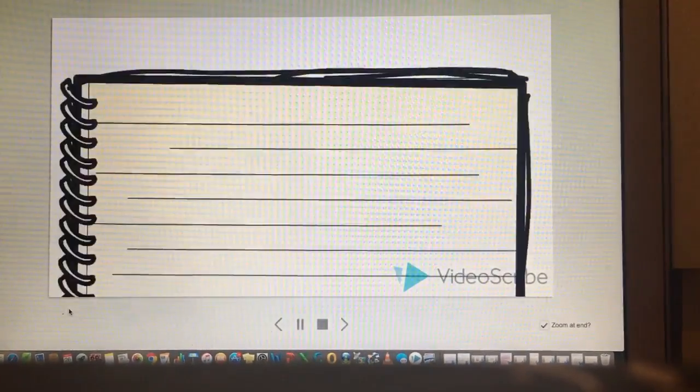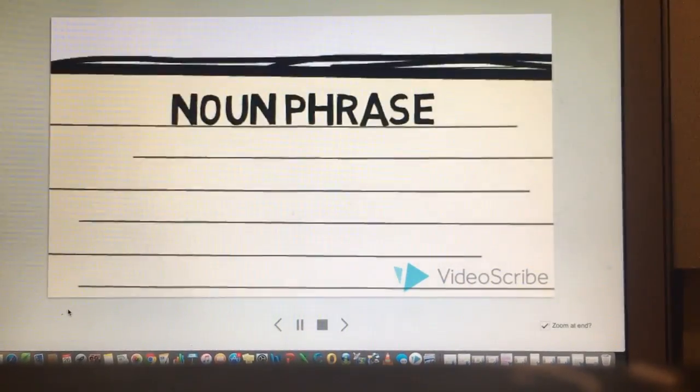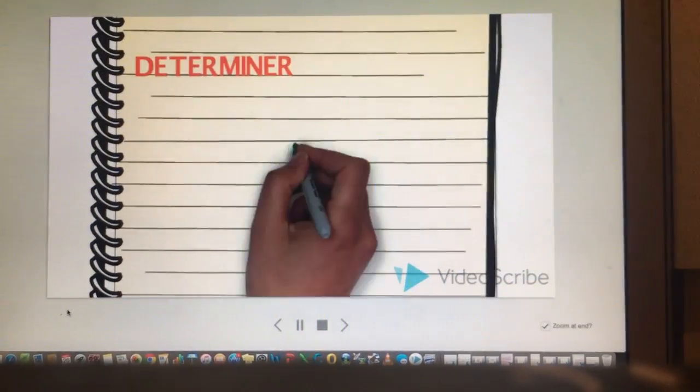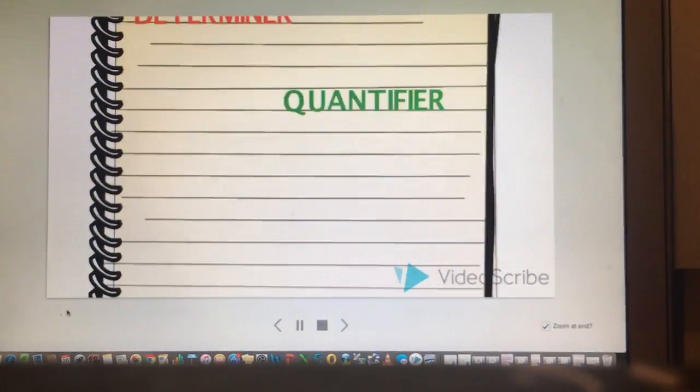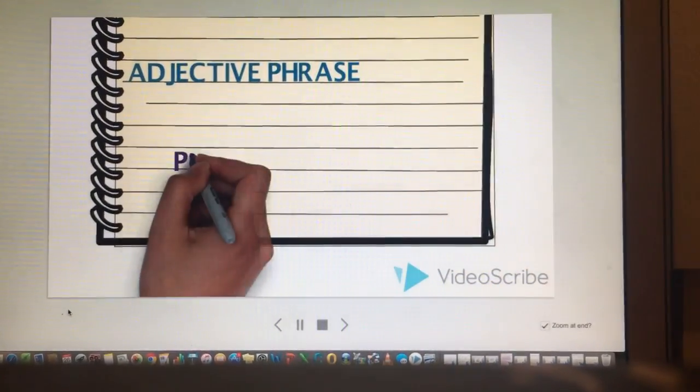Now let's take a look at noun phrases. A noun phrase must include a noun. It can also include a determiner, a quantifier, an adjective phrase, and a prepositional phrase.